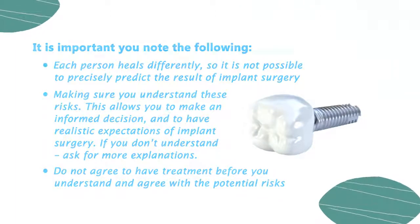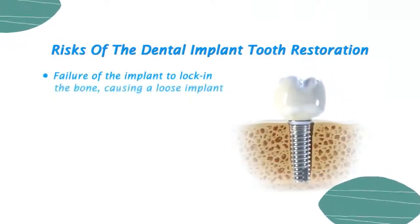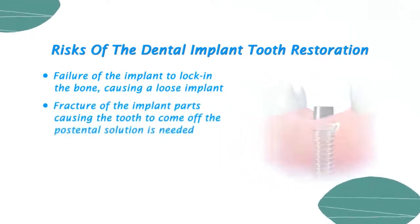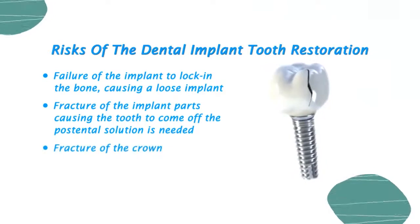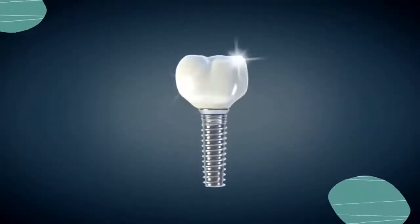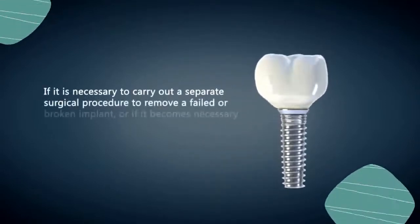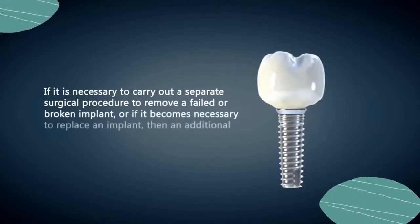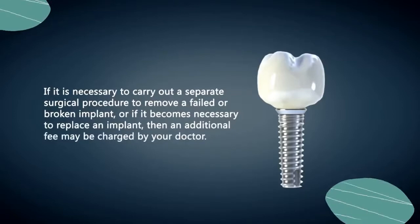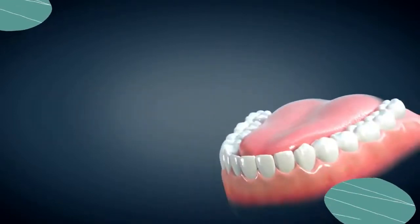Tooth restoration risks include failure of the implant to lock in the bone causing a loose implant, fracture of the implant parts causing the tooth to come off the post, and fracture of the crown. These problems are usually solved by making new parts and new teeth. If it is necessary to carry out a separate surgical procedure to remove a failed or broken implant, or if it becomes necessary to replace an implant, then an additional fee may be charged by your doctor.